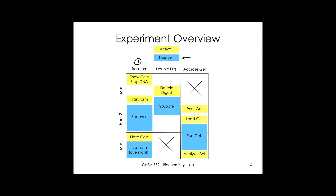There are three basic things we're going to do today. First, transformation — taking a bacterial cell and introducing a plasmid to it. We'll take the plasmid isolated in the last lab and transform it into a new bacterial cell. Second, a double digest: using restriction enzymes as molecular scissors to cut out the insert, then running it on an agarose gel to visualize and confirm what we expect.